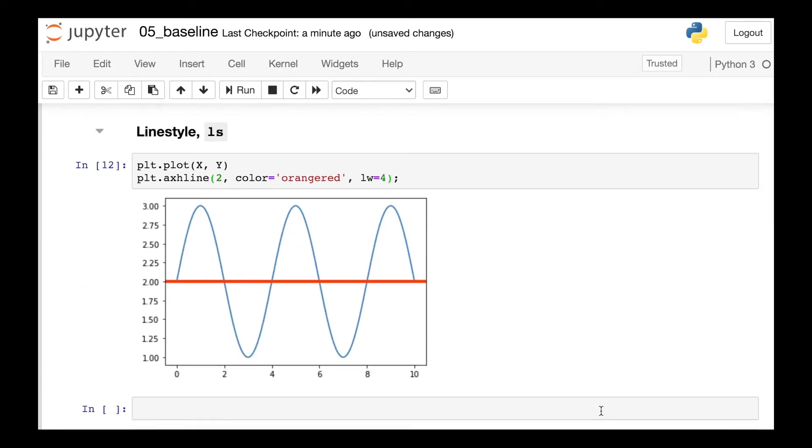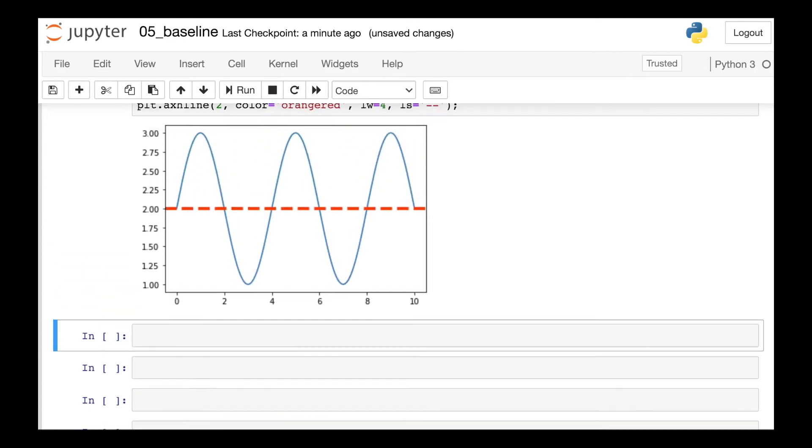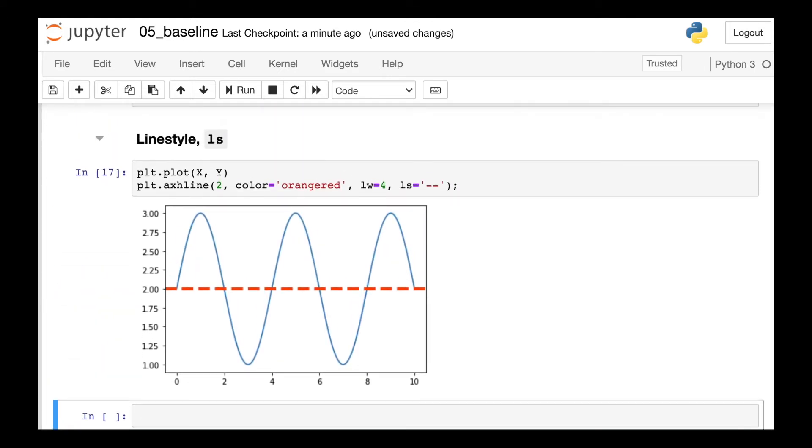We can also change the style of our line by referencing LS, which stands for line style, and then we just pass in a string representing the type of line we'd like to draw. So let's switch over to this nice dashed line.